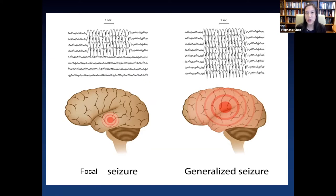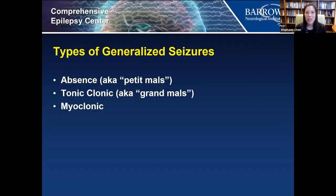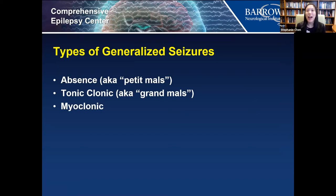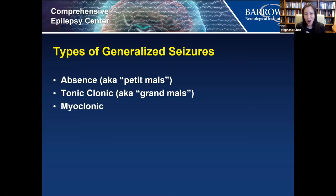There are different symptoms associated with focal versus generalized seizures. A type of generalized seizure is an absence seizure, also called petit mal. These are seizures where the patient may stare briefly for a few seconds, their eyes may roll up, or they may have eyelid fluttering. Oftentimes children have these seizures in school and they may be misdiagnosed as a learning disability, when actually they're missing important parts of class due to frequent seizures.